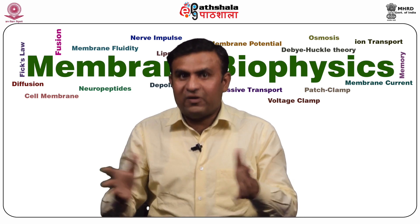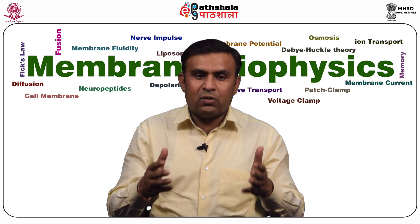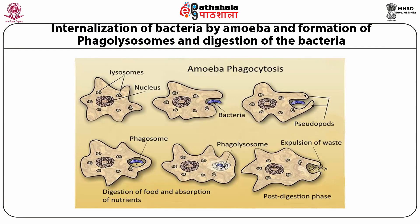In mammals, macrophages and neutrophils are the professional phagocytes, meaning they play an important role in immune defense. This figure shows the mechanism of phagocytosis in amoeba — the internalization of bacteria, formation of phagolysosomes, and digestion of bacteria. In amoeba, when bacteria come near, pseudopodia are created to engulf the bacteria. These pseudopodia fuse with lysosomes forming phagolysosomes, and after digestion, waste products are expelled outside. Thus phagocytosis is an important mechanism for digestion of food and absorption of nutrients in amoeba.